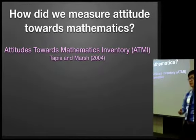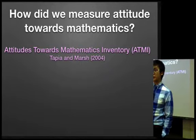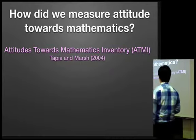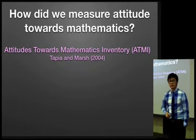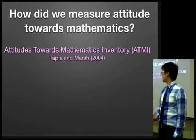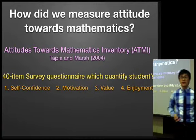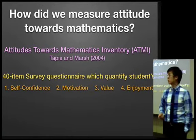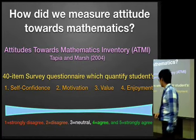Now, in measuring the attitudes of the students towards mathematics, I use the Tapia and Marsh questionnaire, which they developed in 2004. It's called Attitudes Towards Mathematics Inventory, or ATMI. And in this inventory, my students answered a 40-item survey questionnaire, which focused on their self-confidence, motivation, value, and enjoyment.